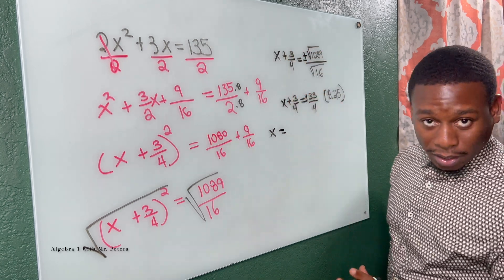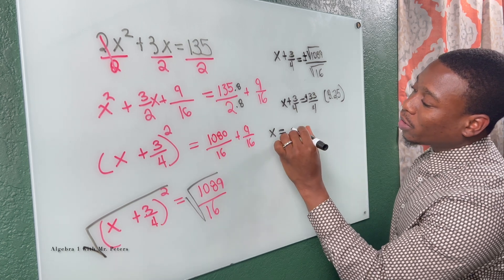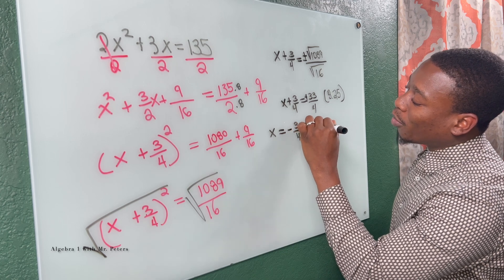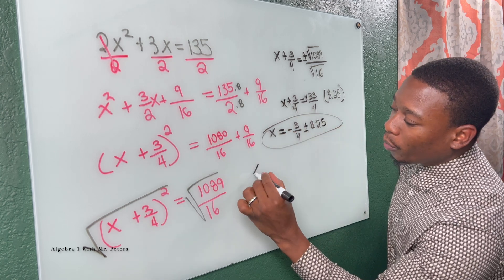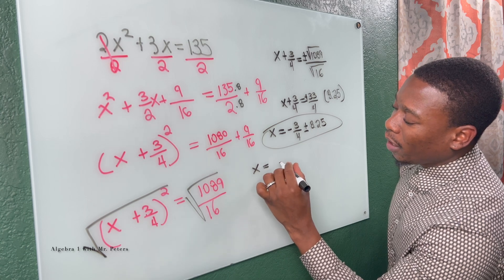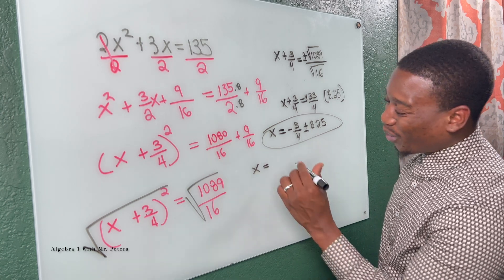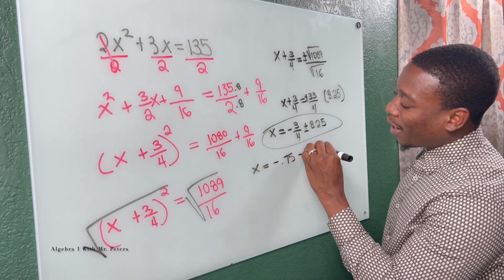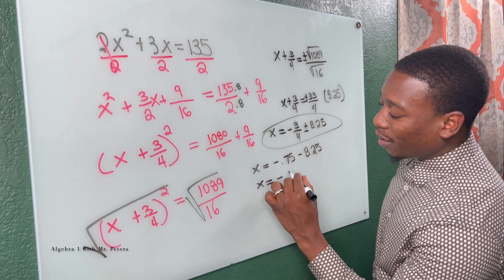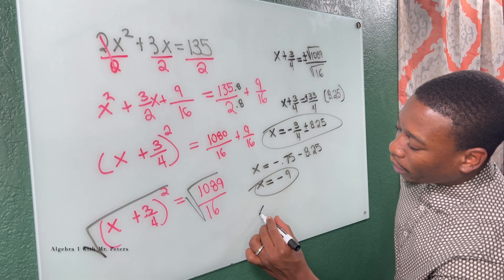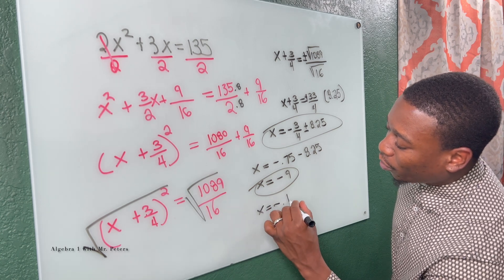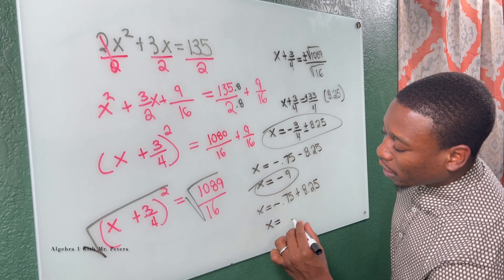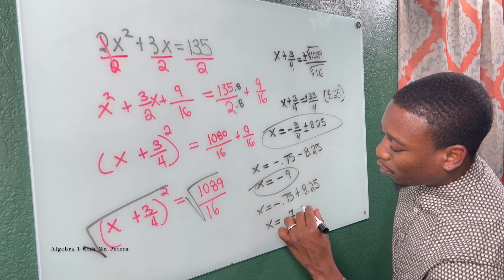So now that we know that, X is equal to negative three over four plus or minus 8.25. Now we go ahead and separate this and I'm gonna turn it to the decimal because this is easier to work with. So we have negative 0.75 minus 8.25, so I know X is equal to negative nine. On my second one, we have X is equal to negative 0.75 plus 8.25 and X should be equal to positive 7.5.